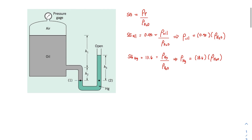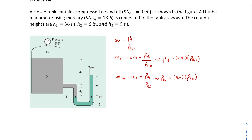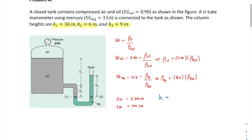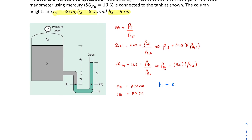Now for the unit conversions of the heights: 36 inches, 6 inches, and 9 inches. One inch equals 2.54 centimeters and one meter equals 100 centimeters. After conversion: h1 = 0.9144 meters, h2 = 0.1524 meters, and h3 = 0.2286 meters. Now we have all heights in meters for our SI unit calculations.